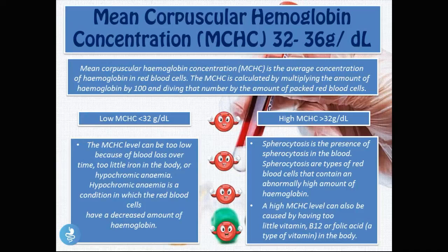A low MCHC can be caused by blood loss over time, too little iron in the body, and hypochromic anemia. A high MCHC is any value over 36 grams per deciliter, and causes include spherocytosis, vitamin B12 deficiency, and folic acid deficiency. The MCHC is responsible for making the blood look darker or lighter — a high MCHC gives the blood a darker color, and a lower MCHC gives a less intense color.